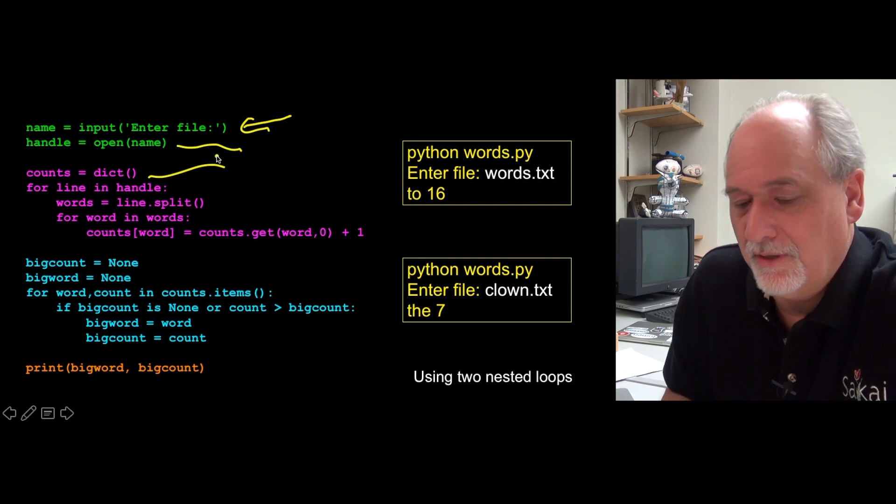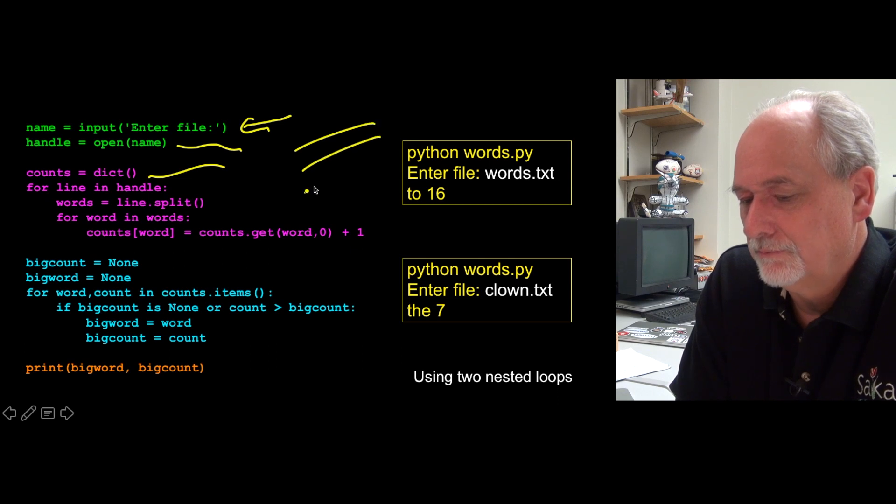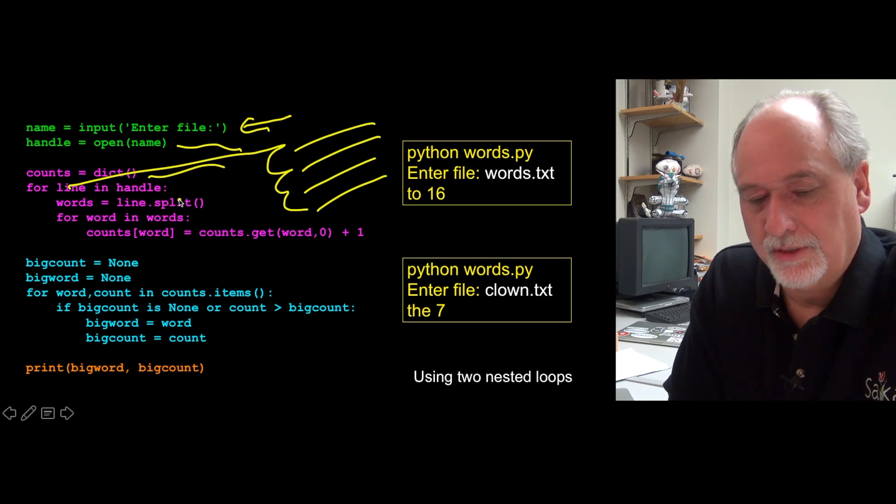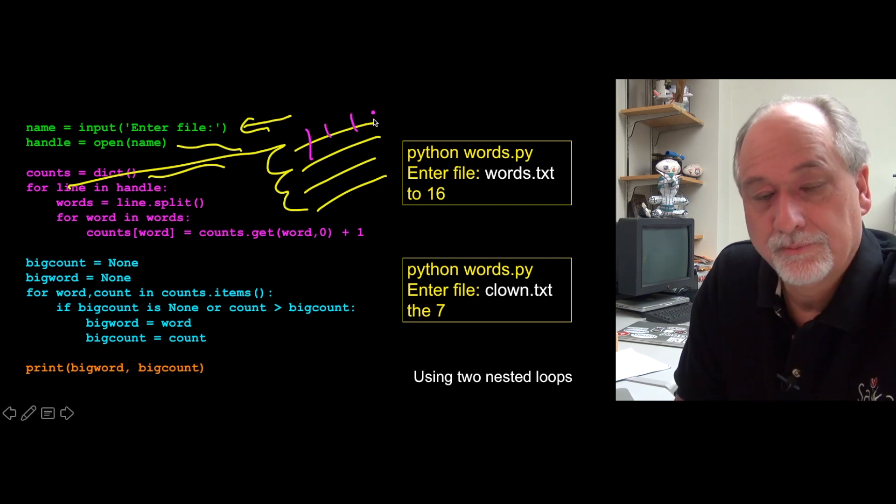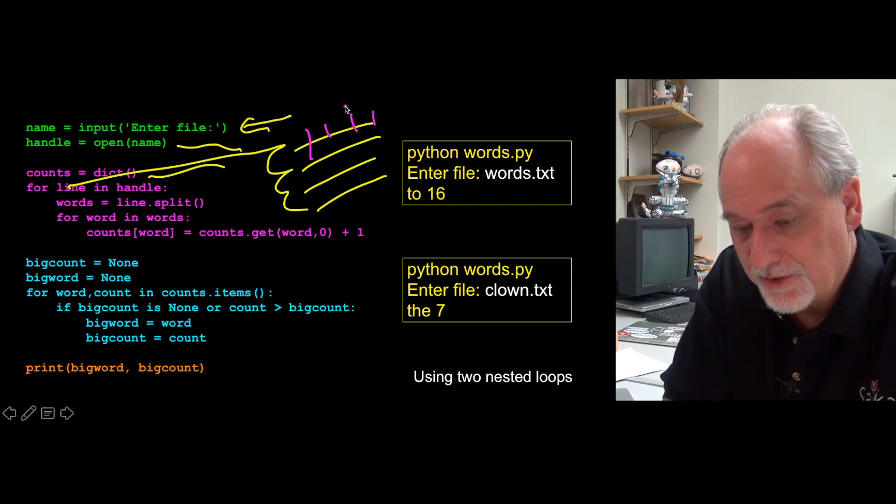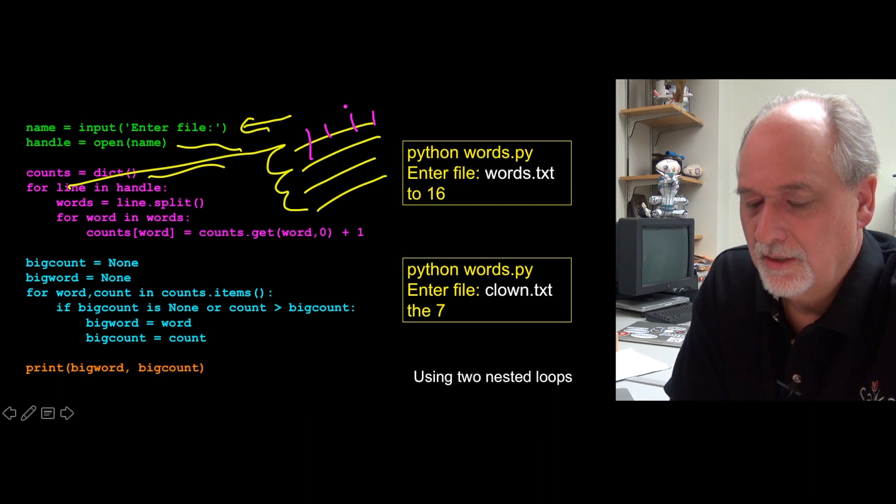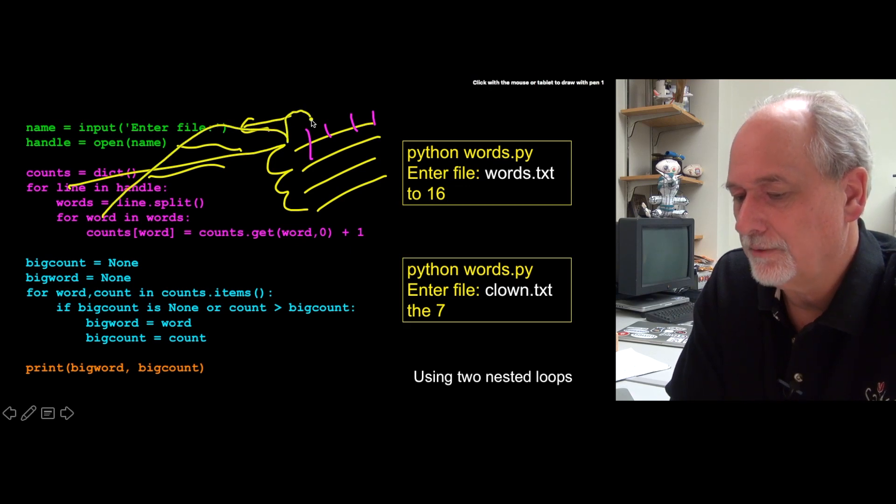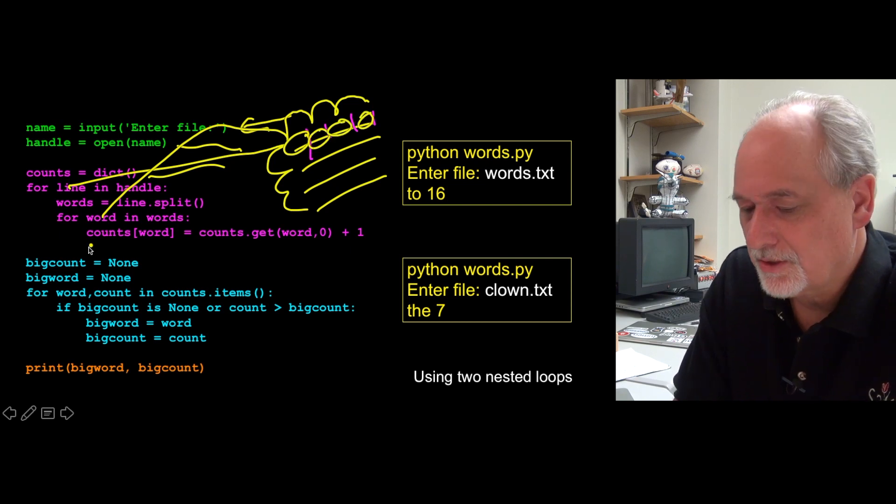Then we're going to open the file name. Then we're going to make an empty dictionary. Again this is all stuff you've done before. And then we're going to have an iteration variable that's going to go through the lines in the file. So line is going to go line, line, line. Then we are going to split that line, each line into words. Chop, chop, chop, chop. So that's words is the list of the words in one line. We're inside of a loop that's going to go through all the lines. And then what we're going to do is we're going to write the, have the word iteration iterate through each word in the line.